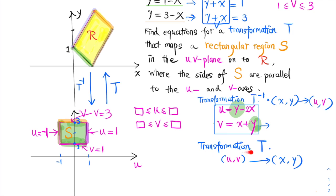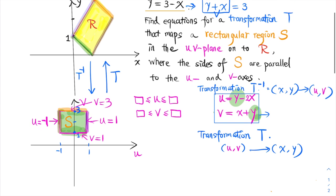To find the transformation T that maps region S on the UV plane to region R on the XY plane, we just need to solve this system of two equations and solve for X and Y.